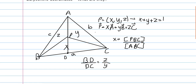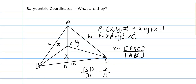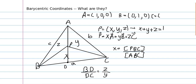Furthermore, we define each vertex of the triangle. A has the coordinates (1, 0, 0), B is (0, 1, 0), and C is (0, 0, 1).